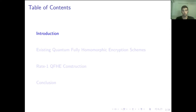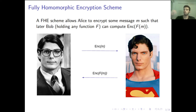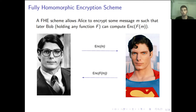I'm going to start with some introduction about everything I just mentioned in the title, starting with Full Homomorphic Encryption, or FHE, which is basically an encryption scheme that allows Alice to encrypt some message, such that later Bob, holding an arbitrary function F, can compute the encryption of F applied to the message. In other words, we want Bob to be able to perform computations over encrypted data without first having to decrypt the original message.